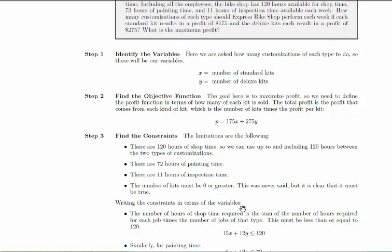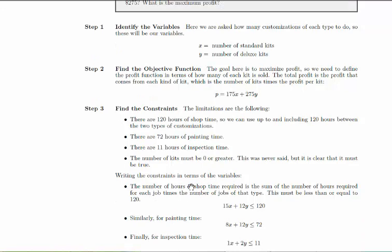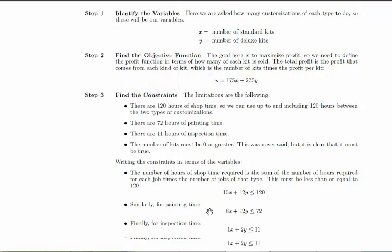So if we write the constraints in terms of the variables, looking at the number of hours of shop time, if each standard kit takes 15 hours of shop time, then the total shop time required for standard kits is 15 times x. Similarly, each deluxe kit takes 12 hours of shop time. So 12 times the number of deluxe kits. Adding those together is our total shop time. And that total shop time has to be less than or equal to 120.